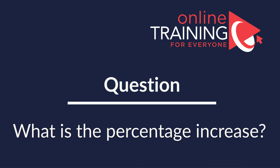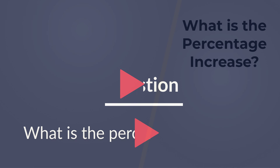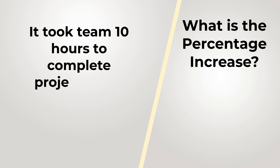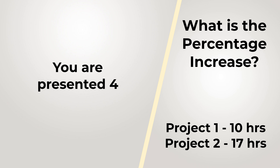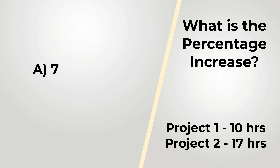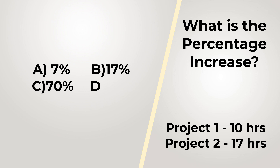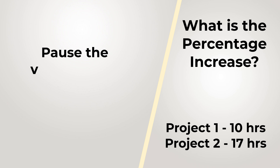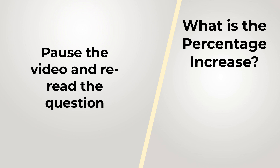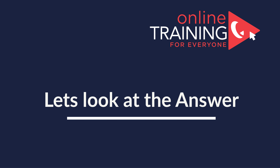Here is a frequent question on the test that a lot of people get wrong. It took 10 hours to complete project one; for project two it took 17 hours. What is the percentage increase between two projects? Your choices are: A) 7%, B) 17%, C) 70%, and D) 170%. Take a close look and pause if you need time — do you think you know the answer?